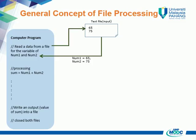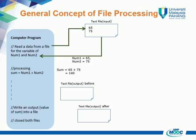Now the program moves to the processing part. The formula is: sum = num1 + num2. The processing will produce the value of sum equals 140. The last part of the program is to write the output to the file. We assume the text file for output is available, open, and ready for the writing process. By the write instruction, the value of sum will be written to the output file, which now contains the value 140.